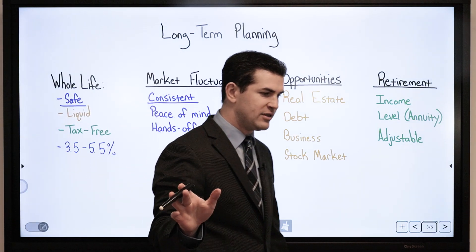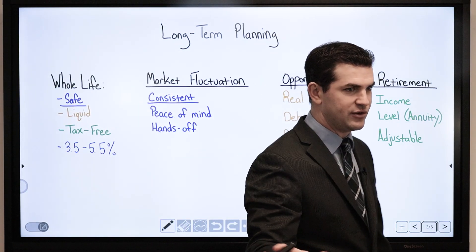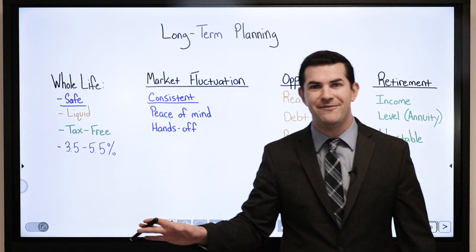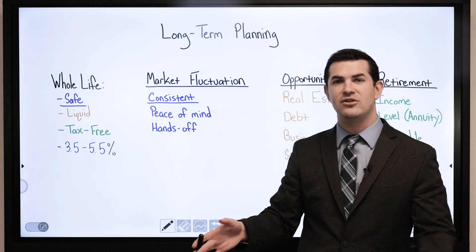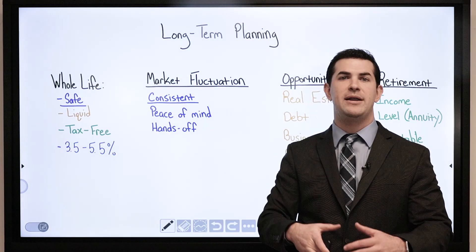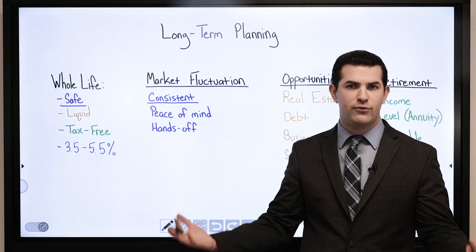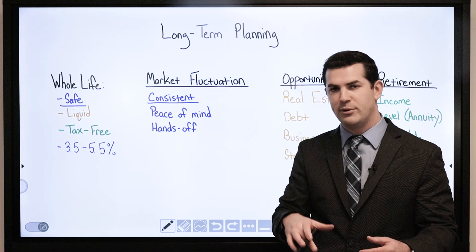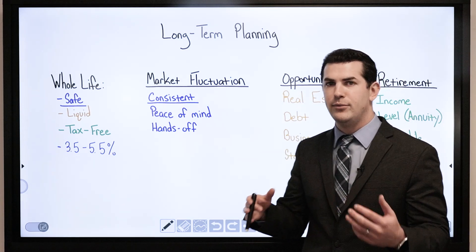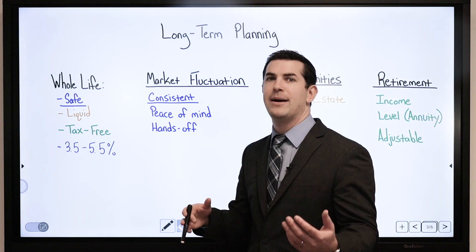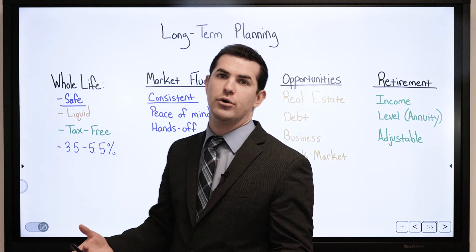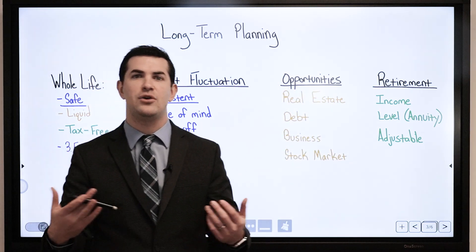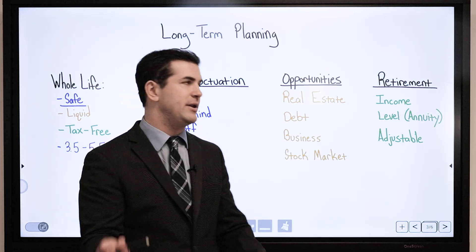If I have my money with a whole life insurance policy, my money is not invested in the stock market at all. I'm with that insurance company and participating in their performance, where they're investing. If it's a mutual insurance company, as a policyholder, you are a partial owner. With a mutual company, policyholders technically own the company.